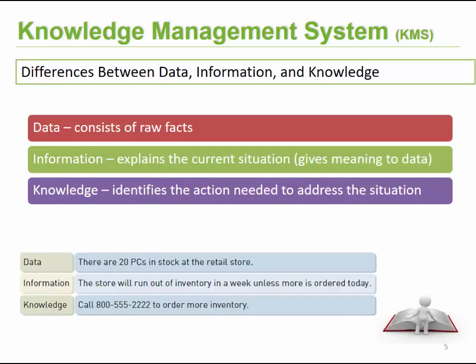That takes us to some of the first definitions we discovered in topic one: data versus information versus knowledge. Data can be classified as the raw facts — typically anything that you want to record and save in a database or some sort of format. As soon as you give meaning to those raw facts, it typically becomes information, which explains the situation and gives meaning to your data. Knowledge, on the other hand, identifies the actions needed to address certain situations and typically where we can start to see patterns and relationships with information.